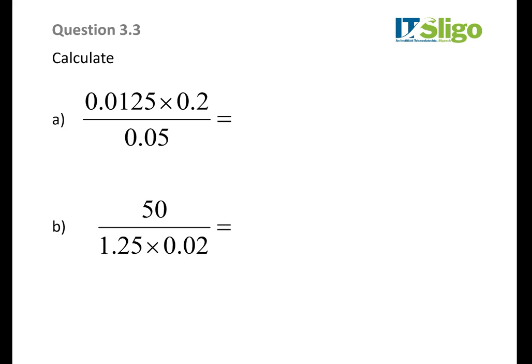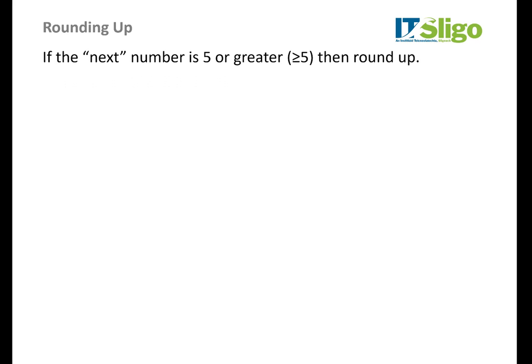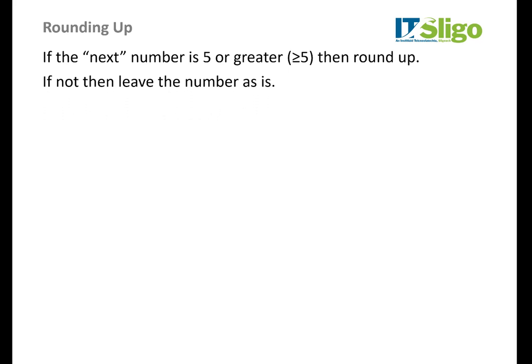That takes care of decimals — how to add, subtract, multiply, and divide decimals, using two completely separate techniques for multiplication and division. Now we're going to take a look at rounding up. Most people know this intuitively: go to however many numbers you're asked to round to, look at the next value — if it's five or greater, round up; if not, leave the number as it is.